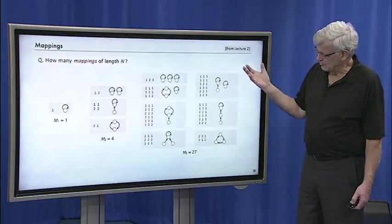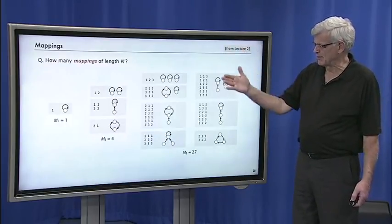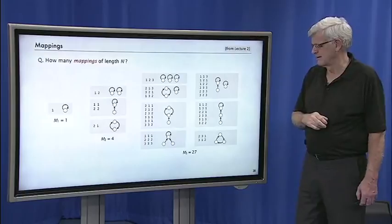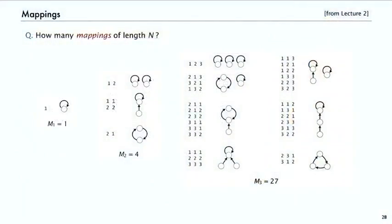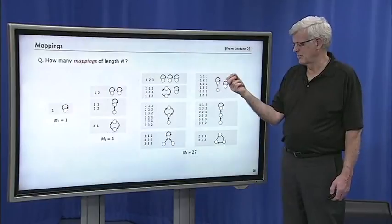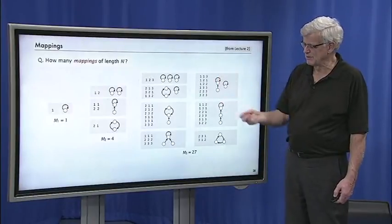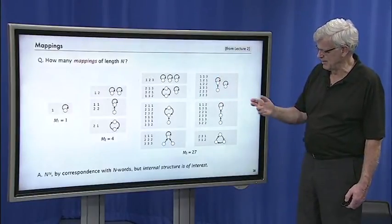So first question is enumeration. How many mappings are there of length n? We talked about this in lecture two. In one sense it's easy. You're mapping n integers onto themselves. For each of the n nodes, there's n possibilities of where it could point, so it's n to the n.